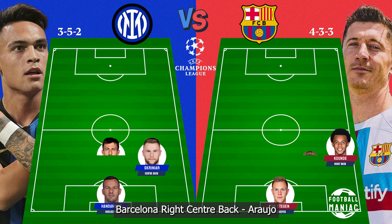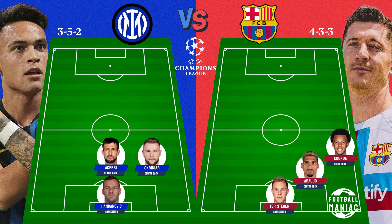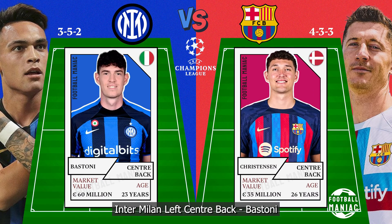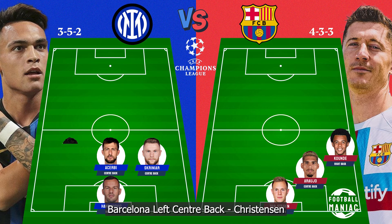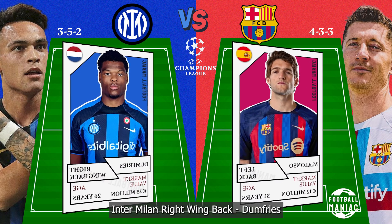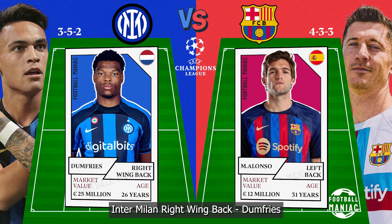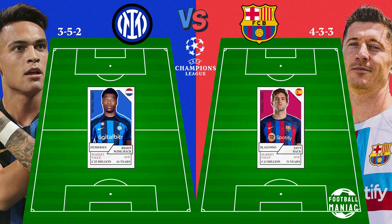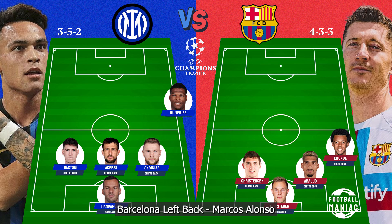Barcelona right center-back: Araujo. Inter Milan left center-back: Bastoni. Barcelona left center-back: Christensen. Inter Milan right wing-back: Dumfries. Barcelona left-back: Marcos Alonso.